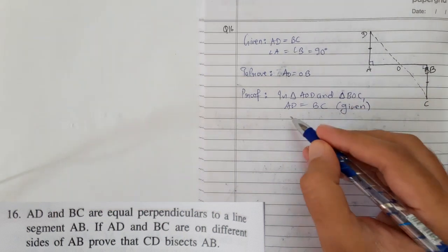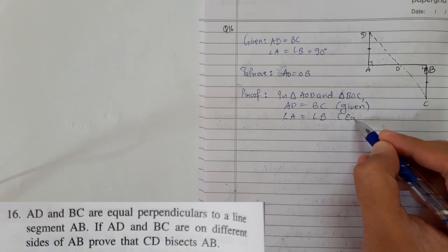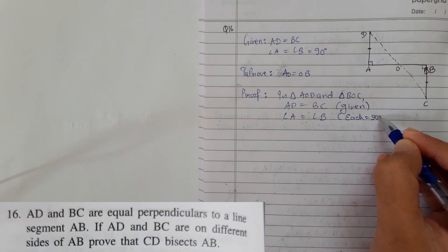Second thing: 90 degree. So you can say angle A and angle B each equals to 90 degree. That was also easy.